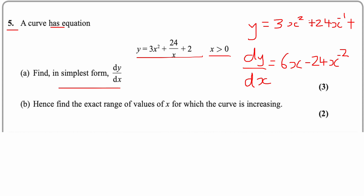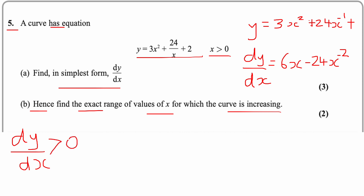So dy/dx = 6x − 24x⁻², which can also be written as 6x − 24/x². That's part (a). For part (b), find the exact range of values for which the curve is increasing — this is when dy/dx > 0, i.e. when the derivative is greater than zero.